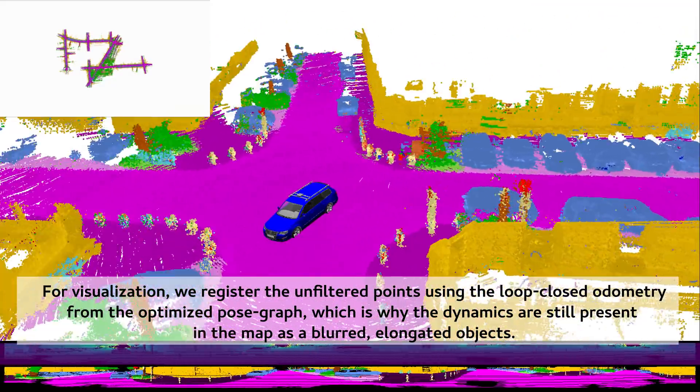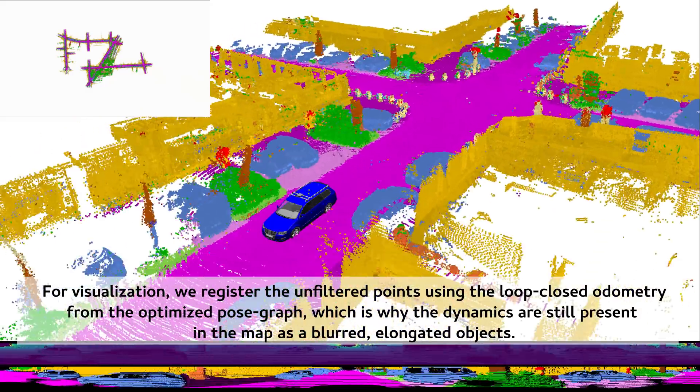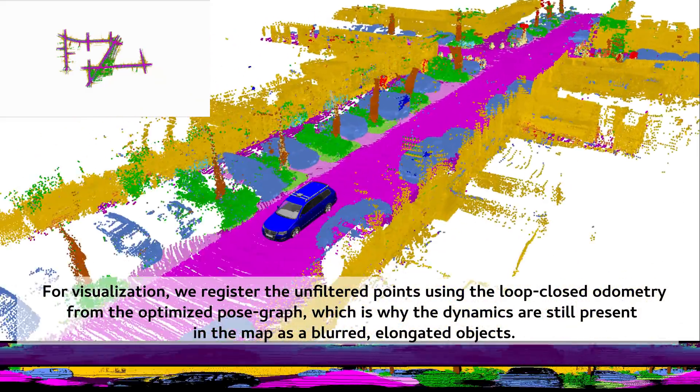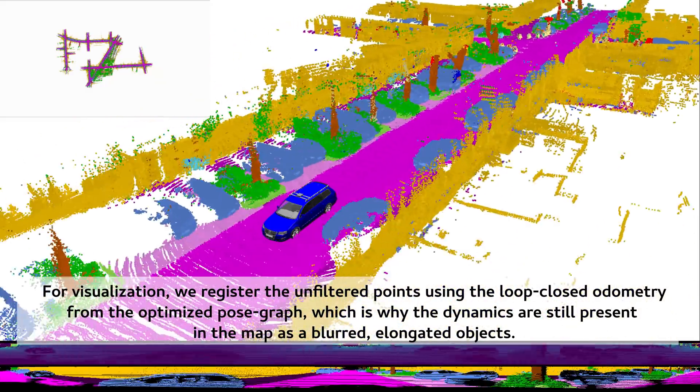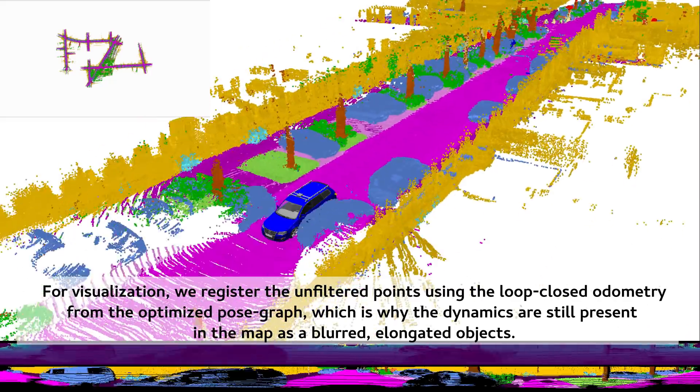For visualization, we register the unfiltered points using the loop-closed odometry from the optimized pose graph, which is why the dynamics are still present in the map as blurred, elongated objects.